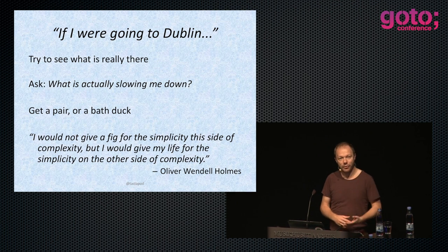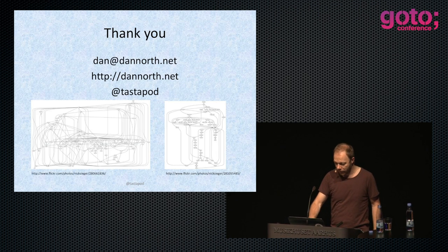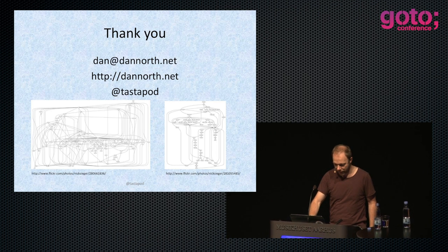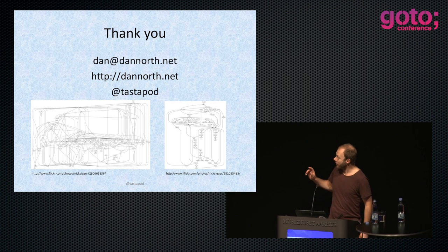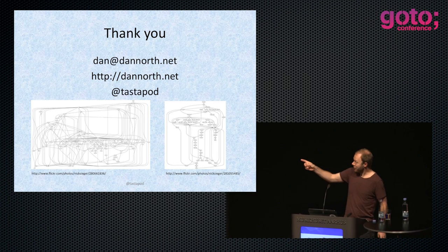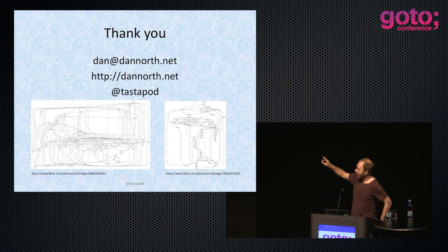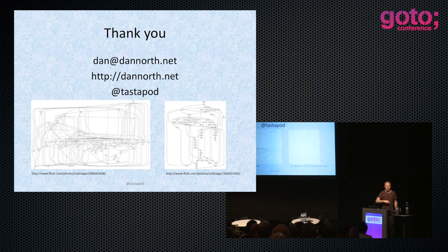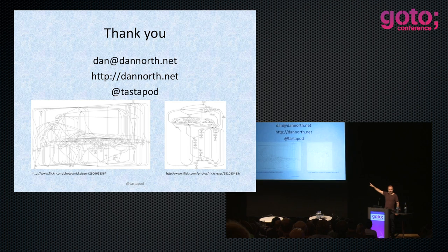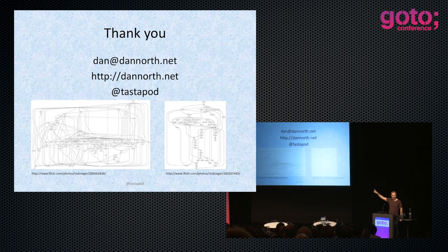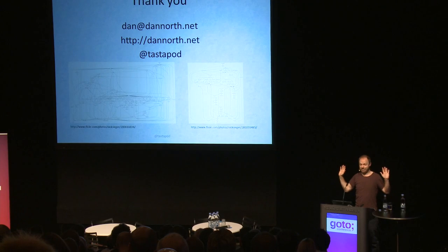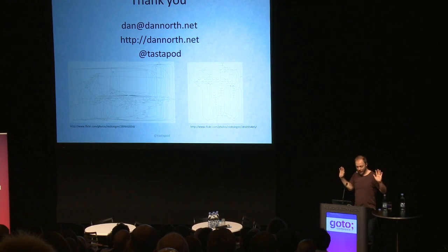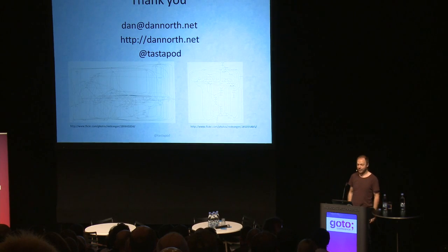This is simple versus simplistic. The picture on the left is the structure of the Ruby language. The thing on the right is the structure of the Python language. Just saying. That's all I've got. Anyone got anything to ask?